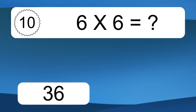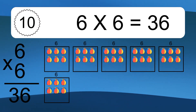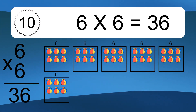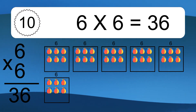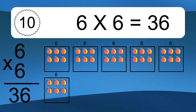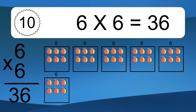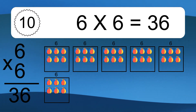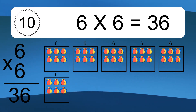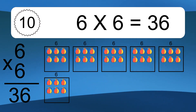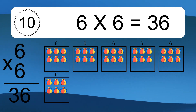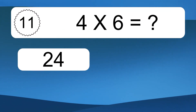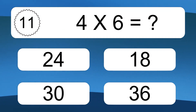6 times 6 equals 36. We have 6 boxes, and each box has 6 colorful balls inside. If you count all the balls in all the boxes together, you will have 6 times 6 balls. This equals 36 balls.